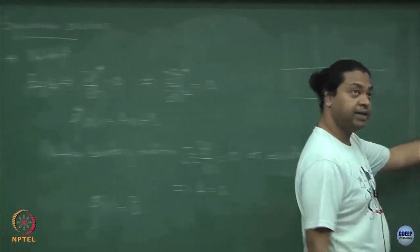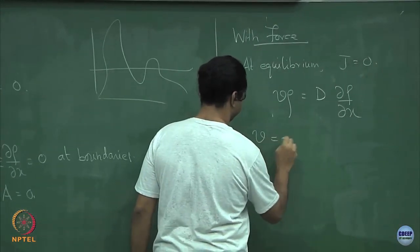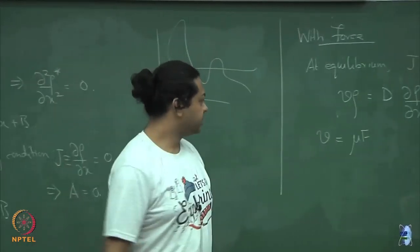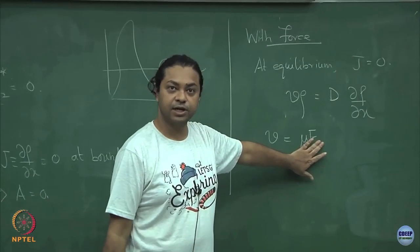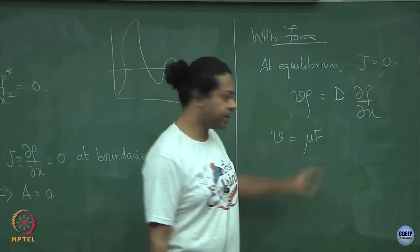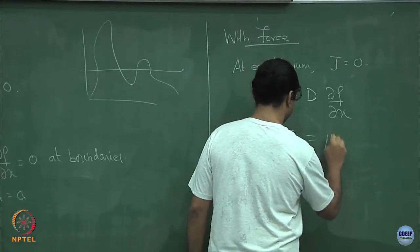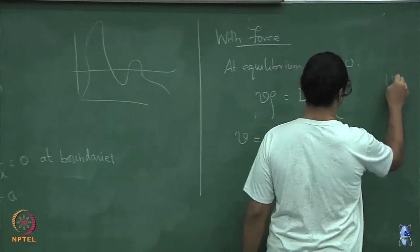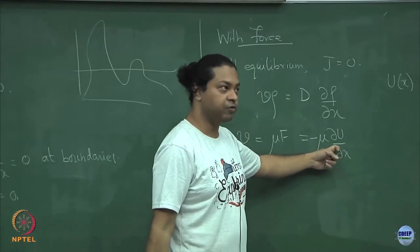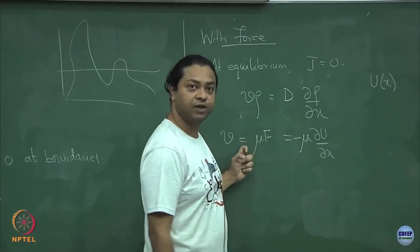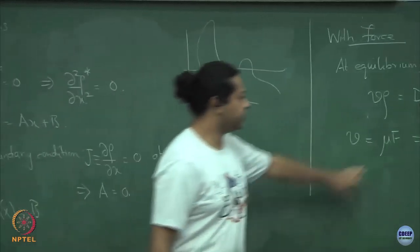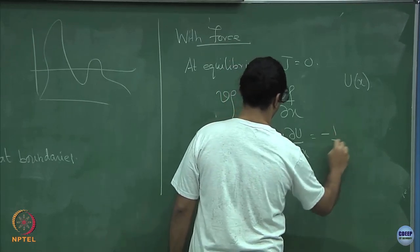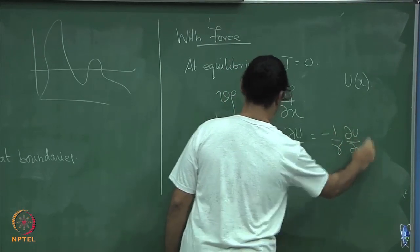Remember that the velocity was proportional to the force — the drift velocity was proportional to the force. Assuming a conservative force, you can write it as the negative gradient of a potential: v equals minus mu·del U del x. With some potential U(x), the gradient gives the force, which causes a velocity. We can write the velocity as minus mu·del U del x, or in terms of friction, minus 1/gamma · del U del x.